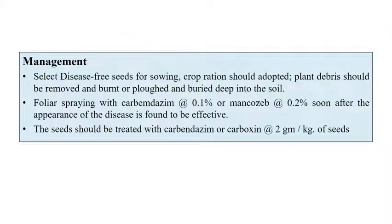For management: since it is a seed-borne disease, selection of disease-free seeds for sowing is very important — this automatically controls the disease to a maximum extent. Crop rotation can also be adopted. Chemical applications like carbendazim at 0.1% or mancozeb at 0.2% can be recommended for foliar spray. Seed treatment with carbendazim at 2 g per kg of seeds can also be recommended.